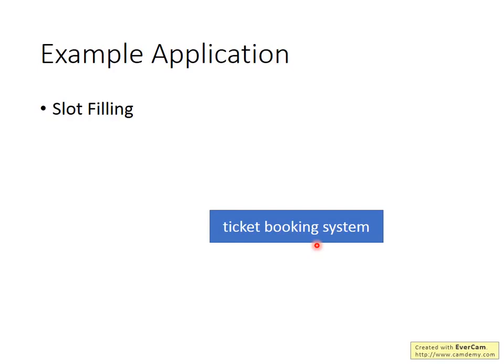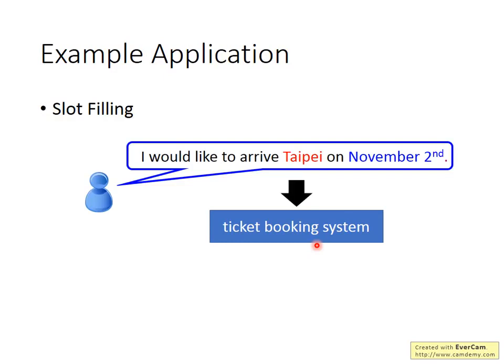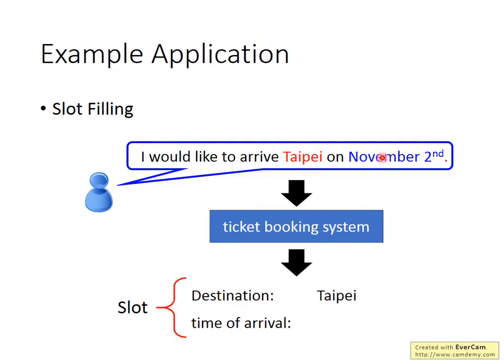What does Slot Filling refer to? For example, if someone tells your booking system, 'I would like to arrive Taipei on November 2,' then your system should automatically know there are slots such as Destination and Time of Arrival. Your system needs to know which slot each word belongs to — Taipei belongs to Destination, November 2 belongs to Time of Arrival, and the other words don't belong to any slot.